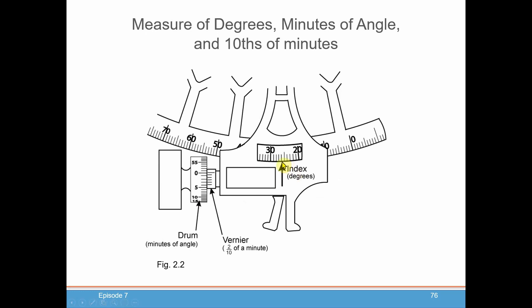So besides the actual degree measurement, which you read on the index arm here, you also have usually a micrometer drum, which will give you the minutes of a degree. So this gives you the full degrees. This gives you the minutes of the degree.